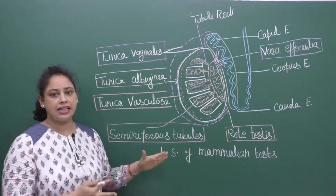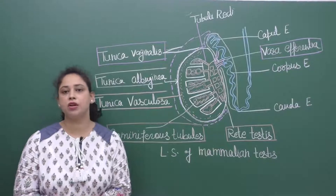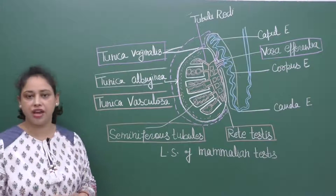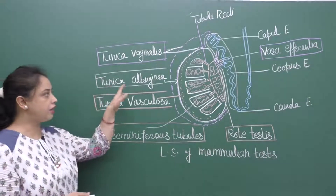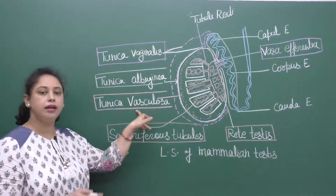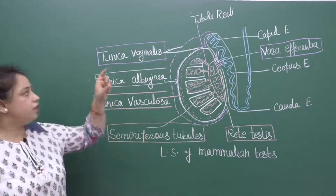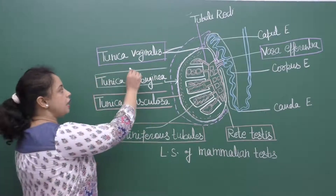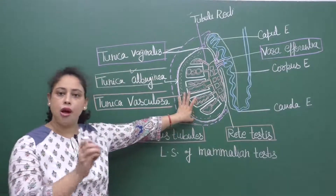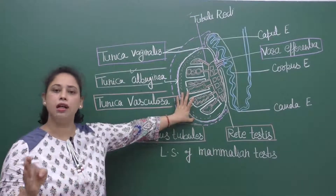Next is LS of mammalian testes. Testes is surrounded by three layers: the outermost layer is called Tunica vaginalis, then the next layer Tunica albuginea, and next is Tunica vasculosa. These three layers form a protective covering. The in-growth of Tunica albuginea divides the testes into compartments called testicular lobules.